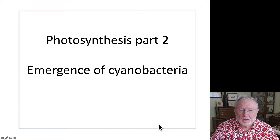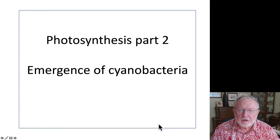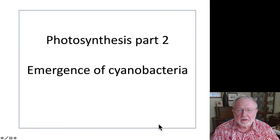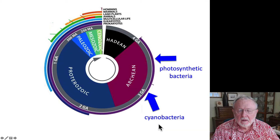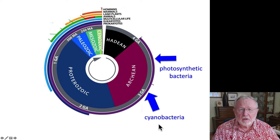Here in part two we learn that the world changed with the emergence of cyanobacteria. We know that photosynthetic bacteria arose something like 3.7 billion years ago, and by about 3.2 billion years ago, we think that cyanobacteria evolved.